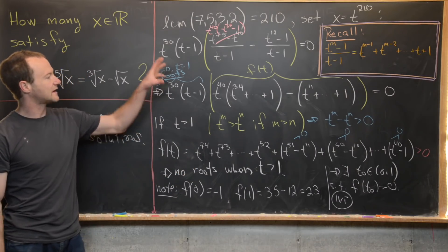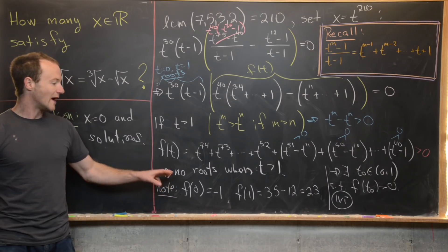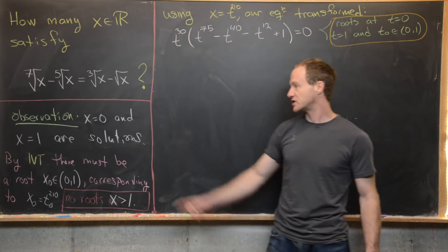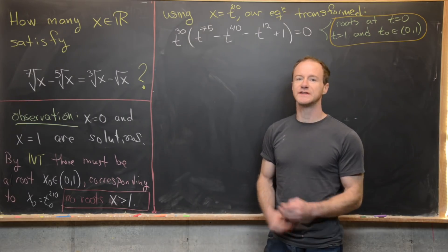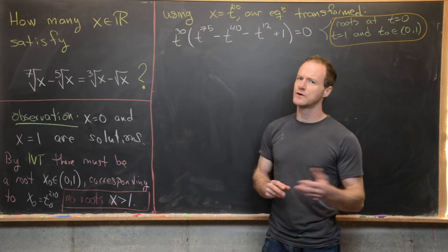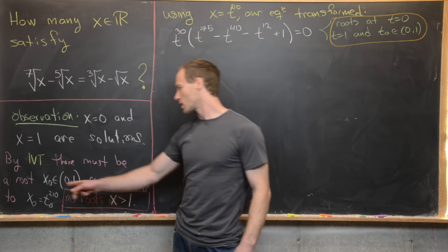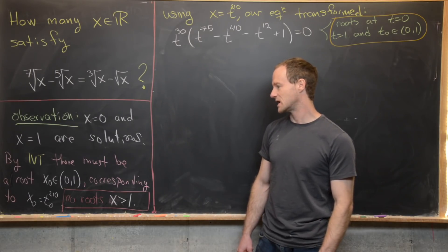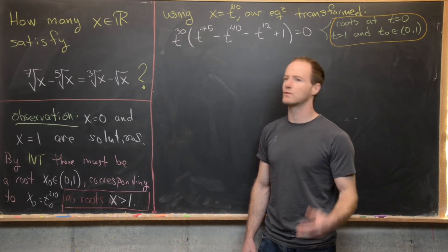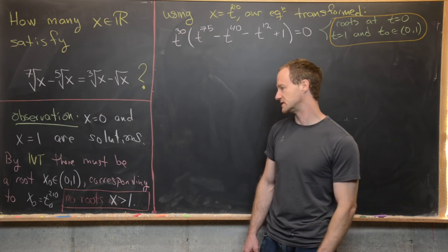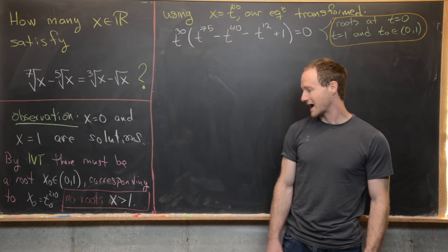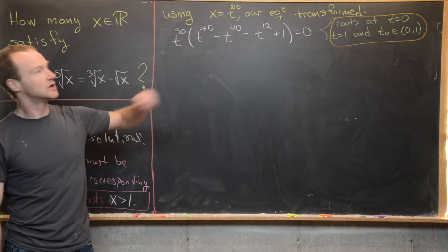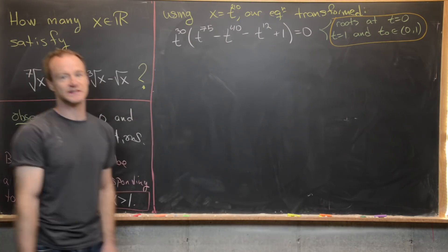By the intermediate value theorem there exists a root t0 on the interval (0, 1) such that f(t0) equals 0. So to summarize: we have two obvious solutions x equals 0 and x equals 1, and using the accessory function f(t) and the intermediate value theorem we showed there must be a third root x0 in the open interval (0, 1), corresponding to x0 equals t0^210. There are no roots for x greater than 1.